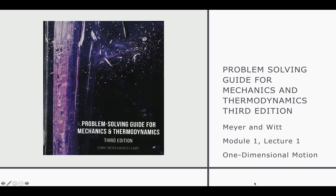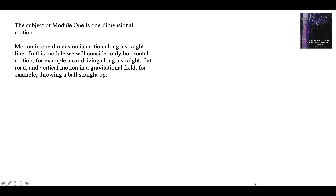This is Lecture 1 of Module 1 in the book Problem Solving Guide for Mechanics and Thermodynamics: One-Dimensional Motion. Motion in one dimension is motion along a straight line, forwards or backwards. In this module we will be considering only horizontal motion — the car driving along a straight flat road — and vertical motion in the gravitational field, straight up or straight down.